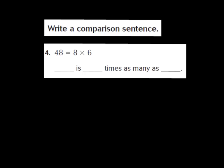Let's look at number 4. They want us to write a comparison sentence. Our equation is 48 equals 8 times 6. I would like you to try this question on your own. Our comparison sentence says 'hmm is hmm times as many as hmm'. Go ahead and pause the video, answer the question, and press play and we'll go over the answer together. Okay, our answer: the 'is' represents our equal sign. So 48 equals — 48 is 8 times as many as 6. Did you get that one right, boys and girls? Great job.